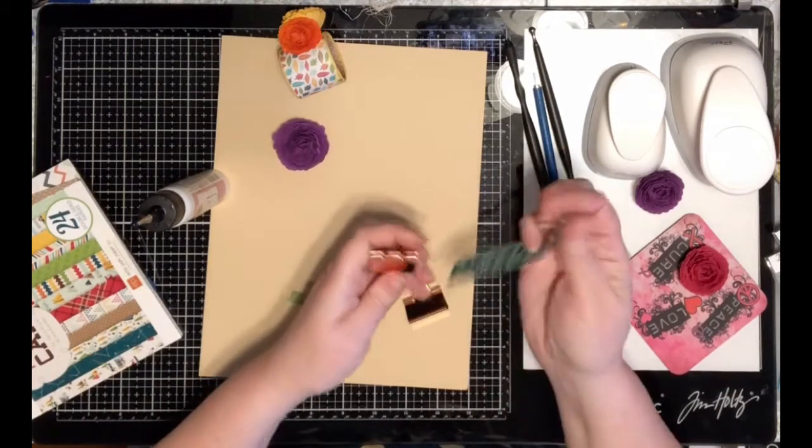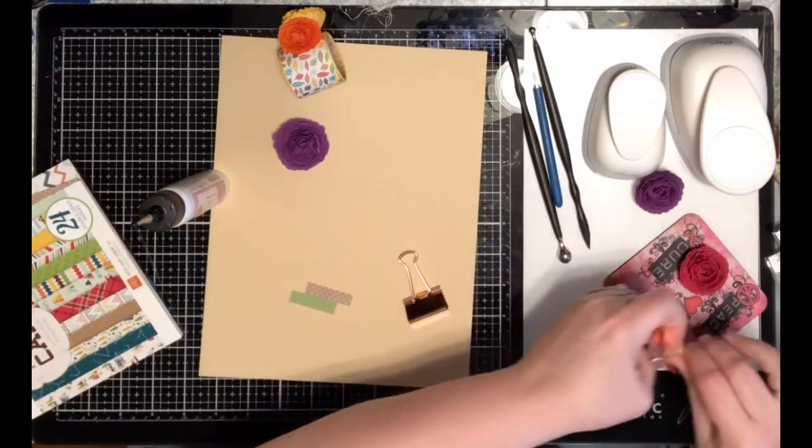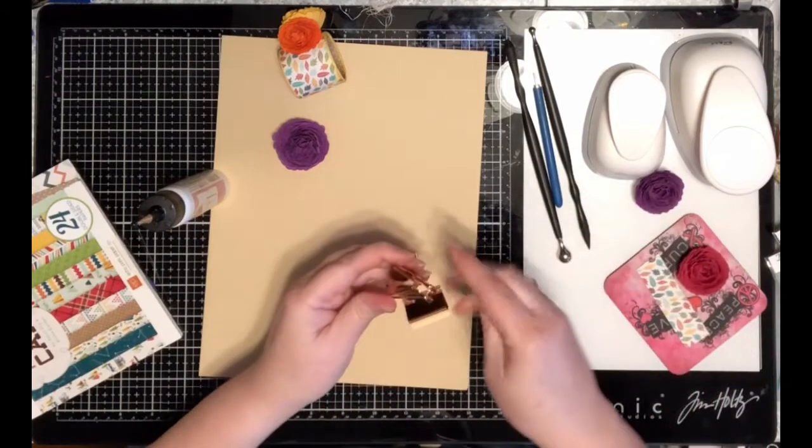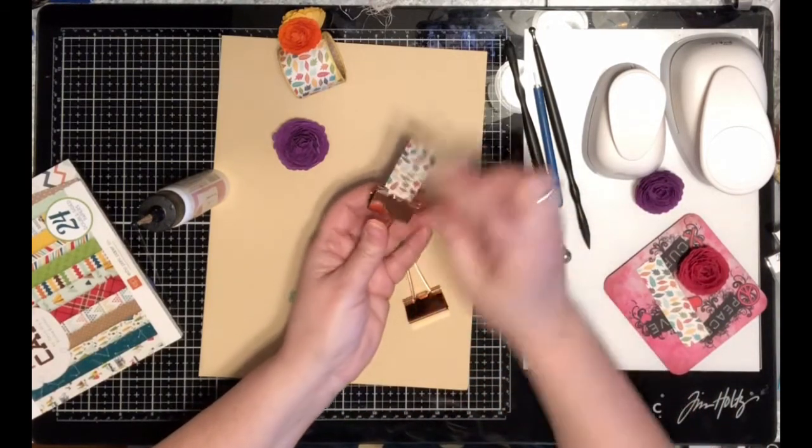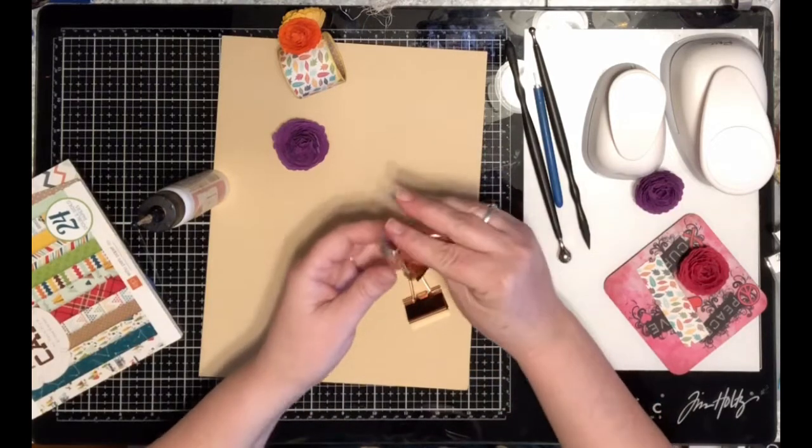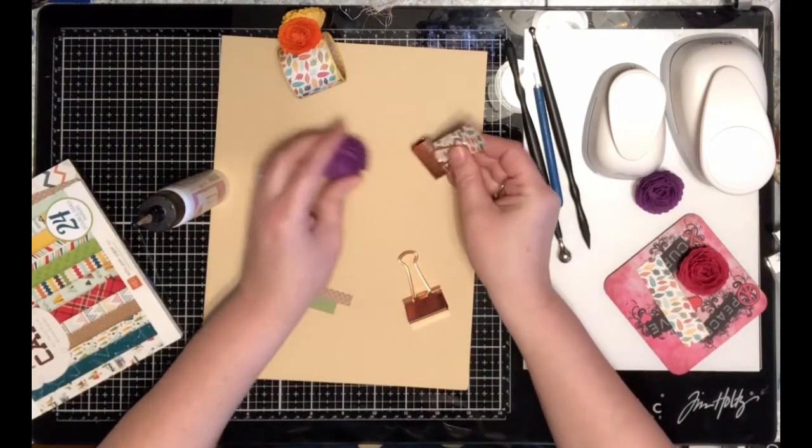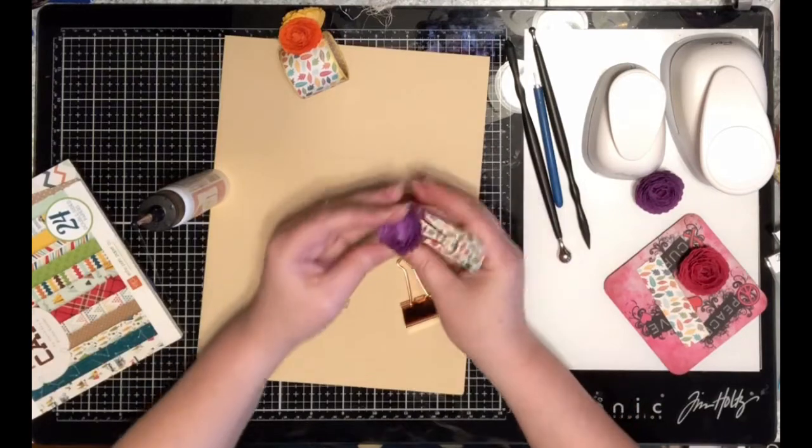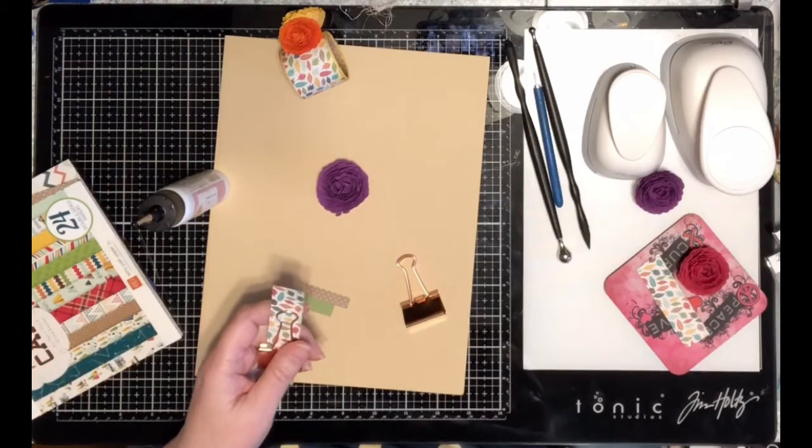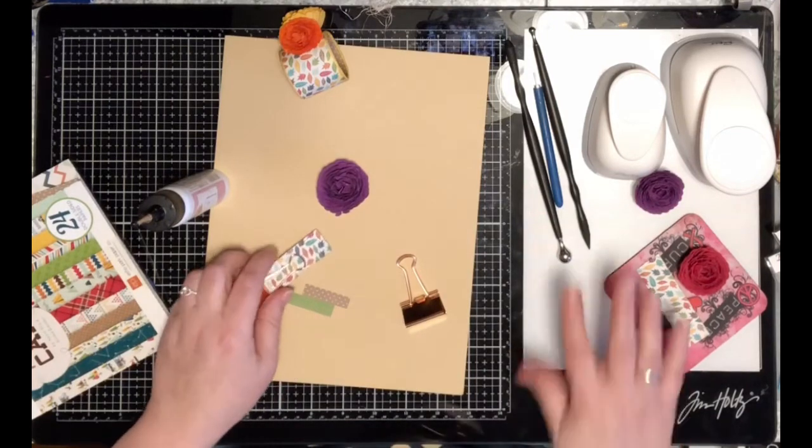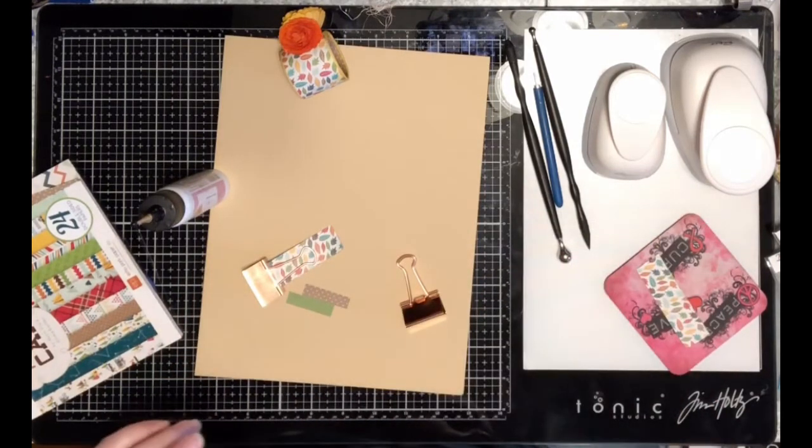You can actually use these as place settings for your Thanksgiving table. Let's go ahead and just use this piece of scrap here. Let's say we put our piece of card in there with the name of the person, and you can just glue on the mum right on the front of that. I'm going to show you how to do these, so let's get started.